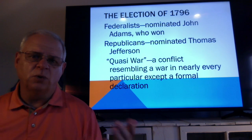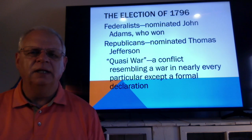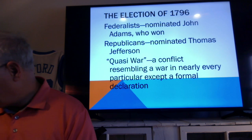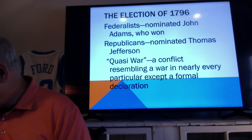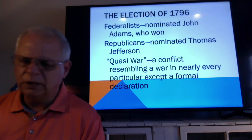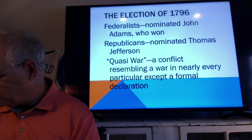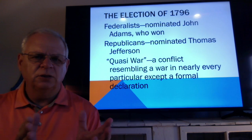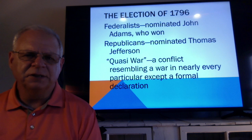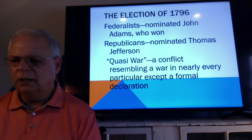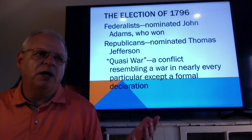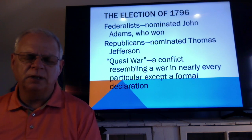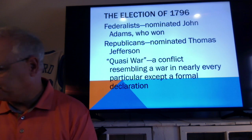It ended up with John Adams winning the presidency as a Federalist, but his vice president was Thomas Jefferson — creating a problem in leadership. Congress would ultimately address this with an amendment saying president and vice president go as a team, guaranteeing they're from the same party. We don't necessarily do that in every state — North Carolina, for example, has a Democratic governor and a Republican lieutenant governor.